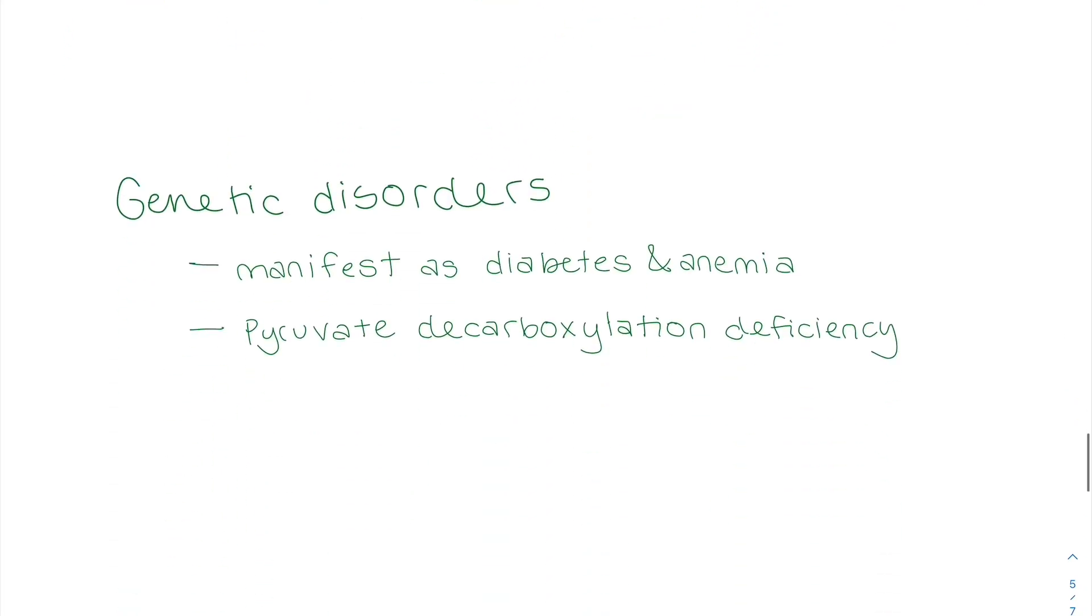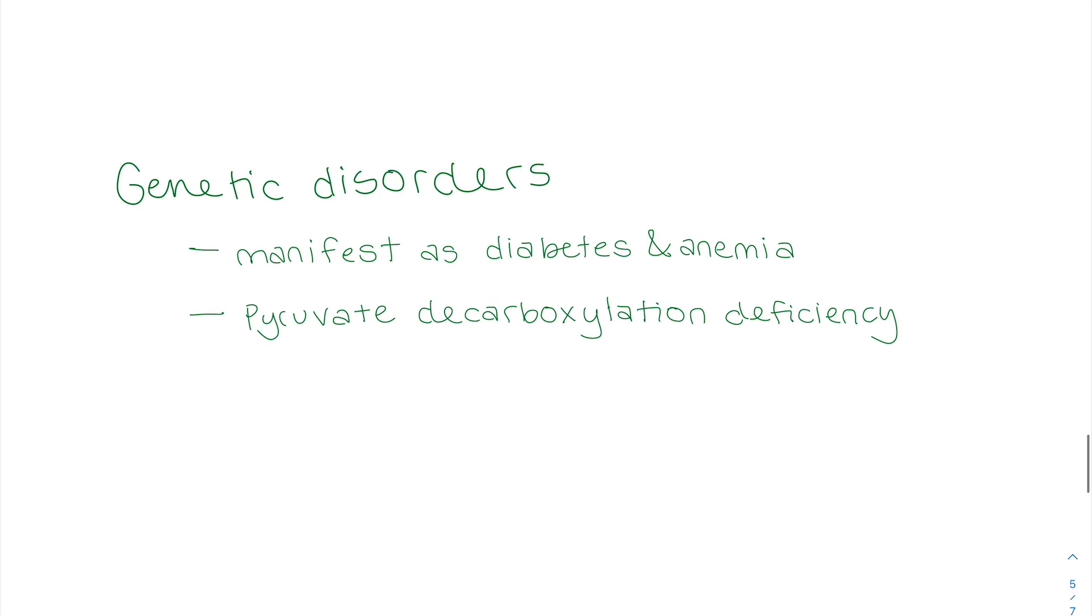And then finally, I want to talk about genetic disorders that could be associated with this. So it manifests itself as diabetes and anemia. So this just shows thiamin is needed for glucose homeostasis and for blood control or hematopoiesis.